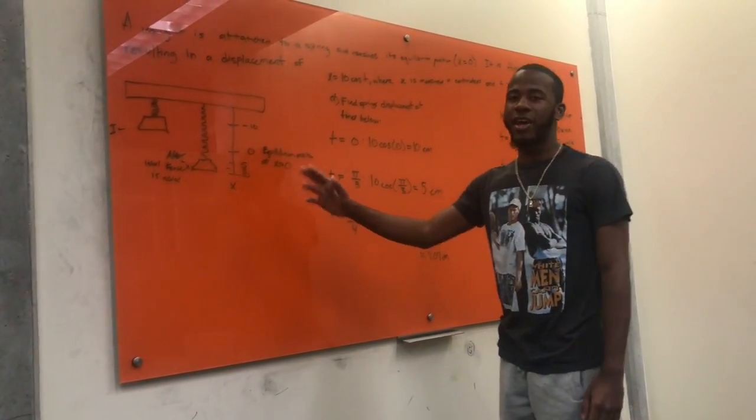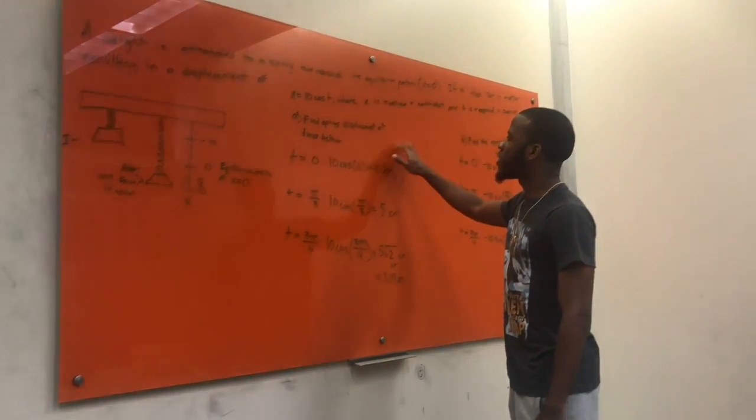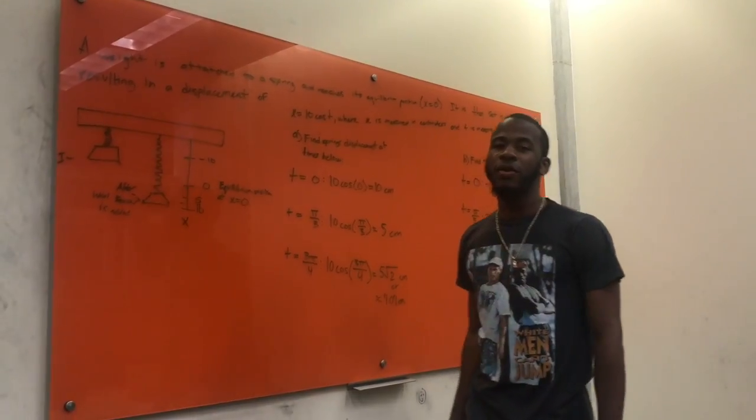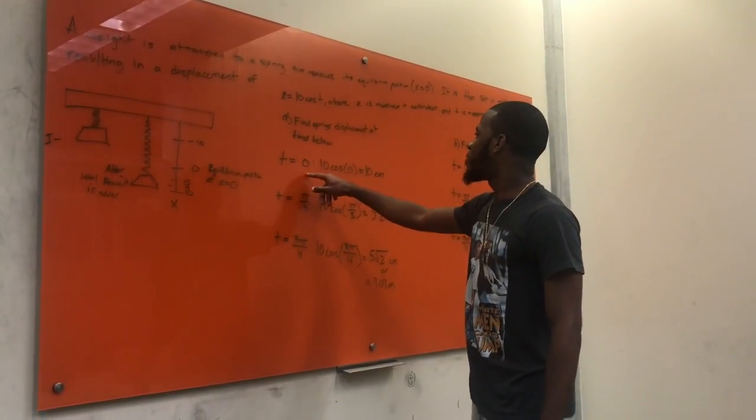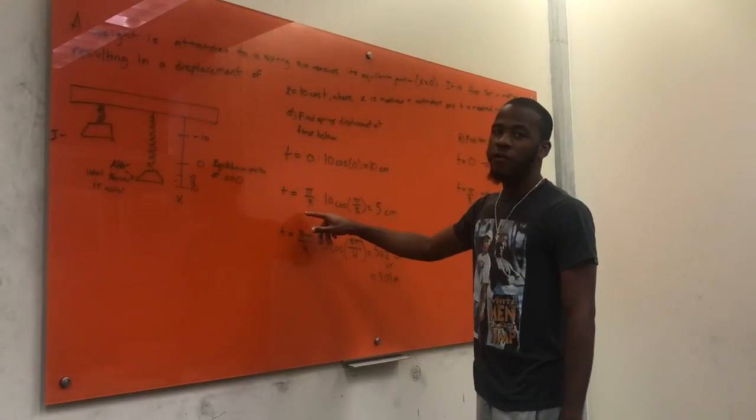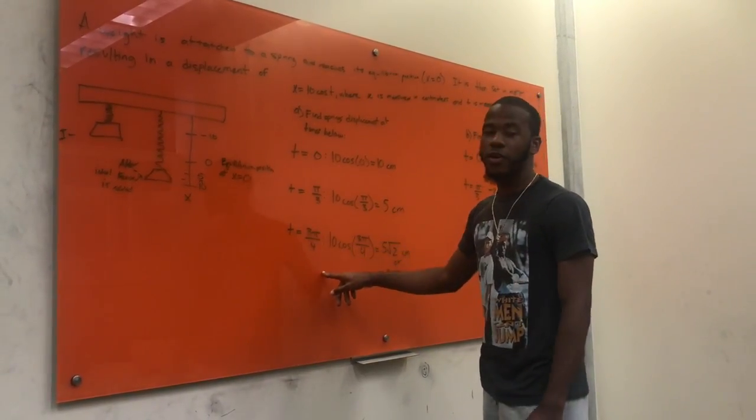Now, every instant after that, we have to find the spring displacement at the times below. Now, they want to know what's the spring displacement at t equals zero, t equals pi over three, t equals three pi over four.